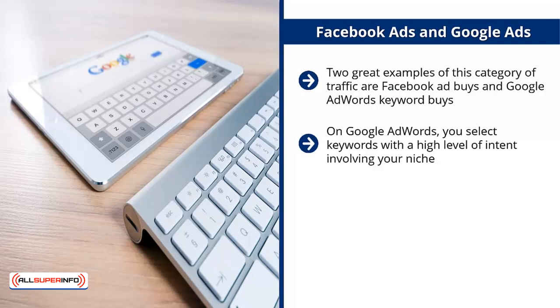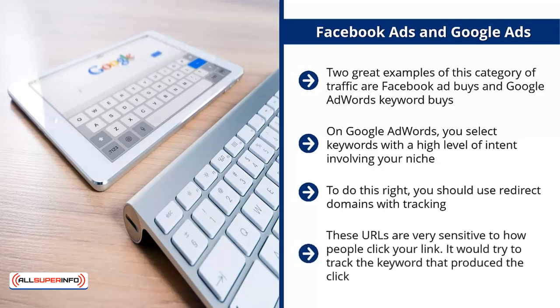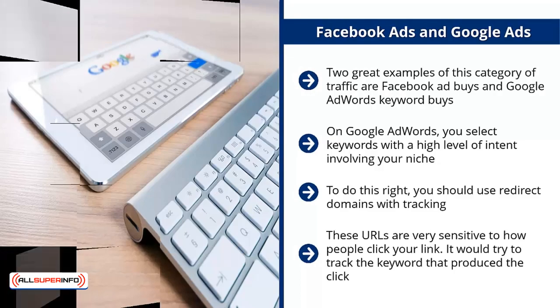You run the campaign so you can see whether you are getting a high volume of clicks or not. To do this right, you should use redirect domains with tracking. When you take out an ad on Facebook or other websites, use a domain that actually redirects to the affiliate link. Make sure you follow the terms of service of the places you're buying traffic from. You also need to use tracking URLs, which are sensitive to how people click your link — they track the keyword that produced the click and pay attention to browser details of people clicking from Facebook. This lets you make educated guesses as to which ad buys led to sales.